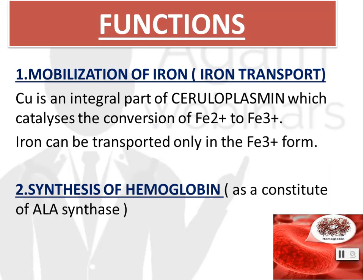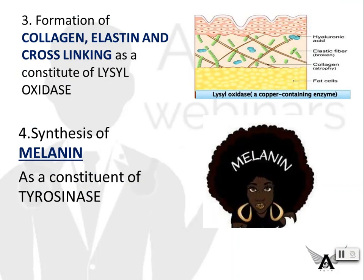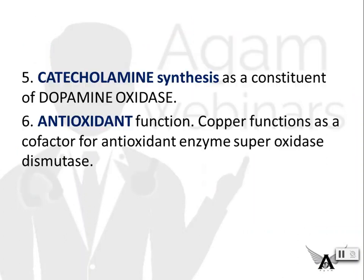The main important function of copper is iron transport. Copper is an integral part of ceruloplasmin, which catalyzes the conversion of ferrous ion to ferric ion — iron can be transported only when it is in the form of ferric ion. Other functions include synthesis of hemoglobin as a constituent of elastinase; formation of collagen, elastin, and cross-linking as a constituent of lysyl oxidase; synthesis of melanin as a constituent of tyrosinase; catecholamine synthesis as a constituent of dopamine oxidase; and copper acts as an antioxidant, functioning as a cofactor for the antioxidant enzyme superoxide dismutase.